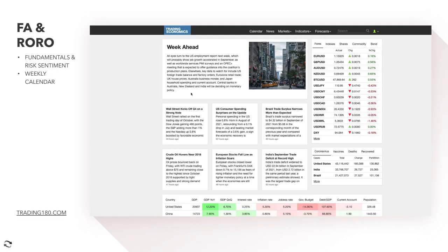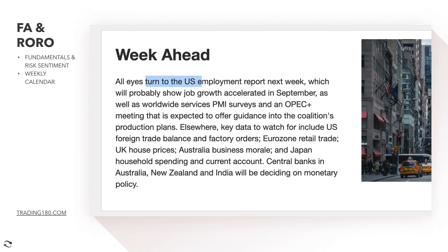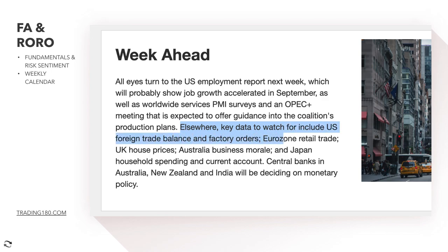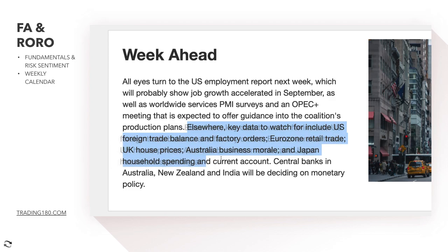Looking at the week ahead on Trading Economics: all eyes turn to the US employment report, which will probably show jobs growth accelerated in September, as well as worldwide services PMI surveys and an OPEC Plus meeting expected to offer guidance on the coalition's production plan. Key data to watch includes US foreign trade balance and factory orders, eurozone retail trade, UK house prices, Australia business morale, Japan household spending, and central bank decisions in Australia, New Zealand, and India.